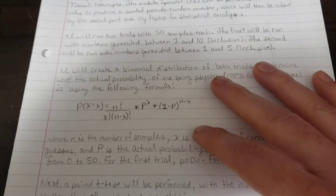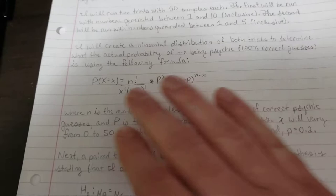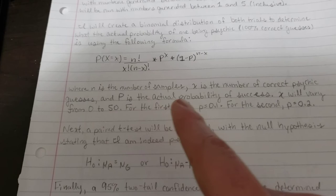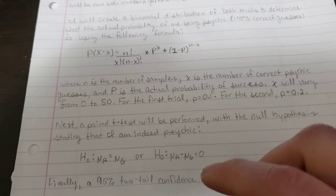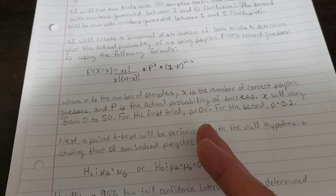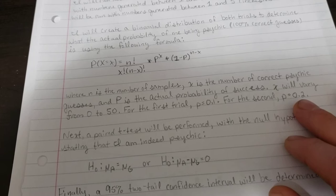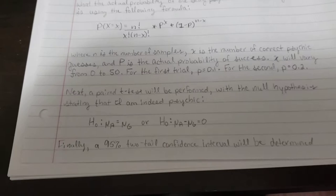Then I'm going to create a binomial distribution of both trials to determine what the actual probability of me being psychic is, and that's defined as 100% correct guesses. So we've got the binomial equation here: P(X=x) = n!/(x!(n-x)!) * p^x * (1-p)^(n-x), where n is the number of samples, x is the number of correct psychic guesses, and p is the actual probability of success. X is going to vary from 0 to 50. For the first trial, probability will be equal to 10% or 0.1. For the second, probability will be 20% or 0.2. We'll have five numbers, 20% chance of picking the correct one.